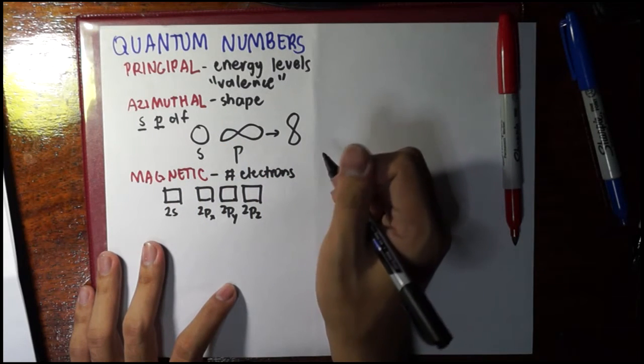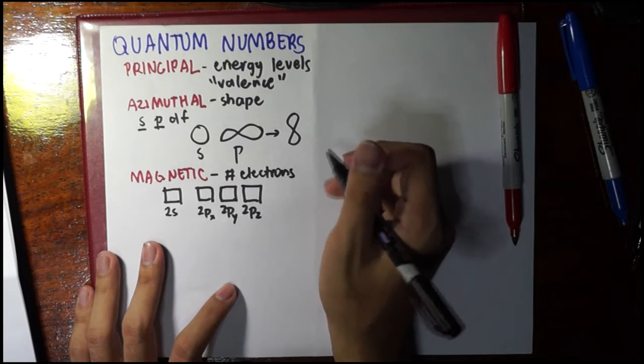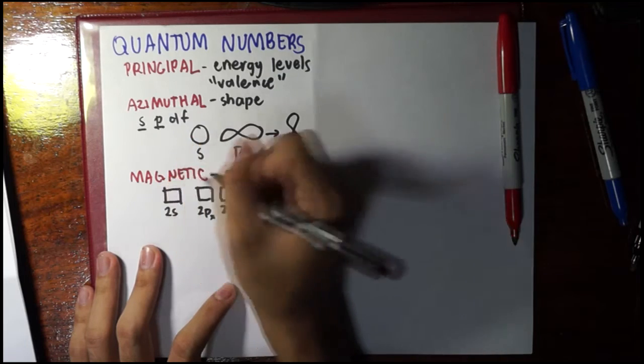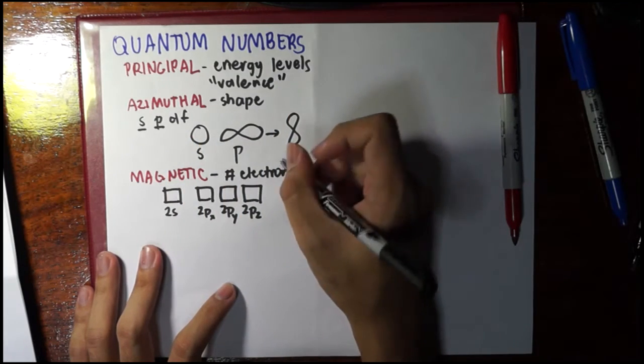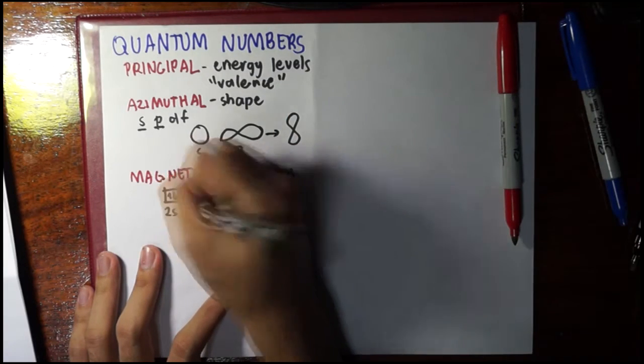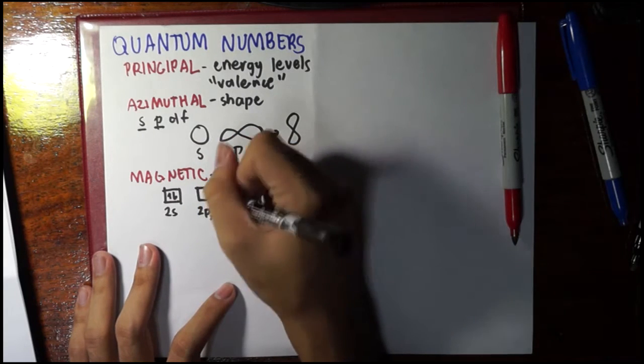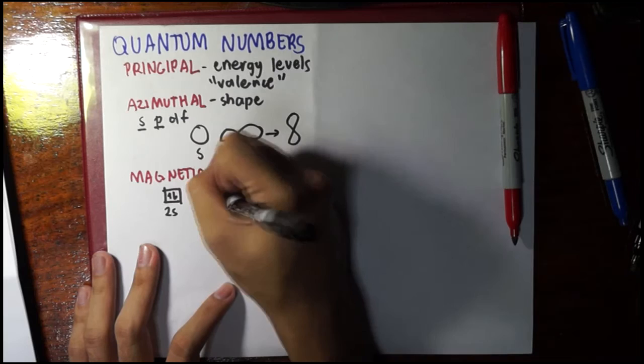That doesn't make sense until I draw it. First, you fill up the s. Then when you go to the p, since there is more than one slot, you go through them first, then you fill them up after.